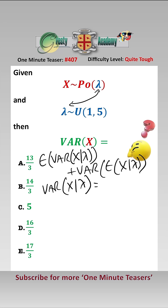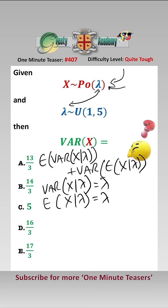Var(X|λ) equals λ and E[X|λ] equals λ, both because X follows a Poisson distribution.